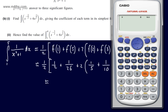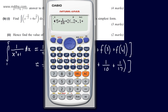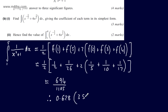Evaluating on a calculator: 0.5 times 0.5 plus 1/26, then 2 lots of 1/5 (which is 0.2) plus 1/10 (which is 0.1) plus 1/17, closing the bracket gives 694 over 1105. Rounding to 3 significant figures, the answer is 0.628.